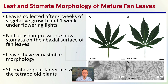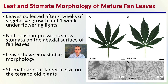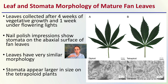Looking specifically at cannabis now: leaf stomata morphology of mature fan leaves. We see a comparison where A is diploid and B is tetraploid, and the same comparison with stomata in C and D. Leaves were collected after four weeks of vegetative growth and one week under flowering lights. The black and white images show nail polish impressions of the stomata on the abaxial surface of the fan leaves — literally applying nail polish and lifting it to see stomata structure. Remember, stomata are the pores on the underside of leaves that regulate water loss and carbon dioxide intake. Stomata appear larger in size on the tetraploid plants — the scale bars represent the same size, and these are clearly larger than the diploid.